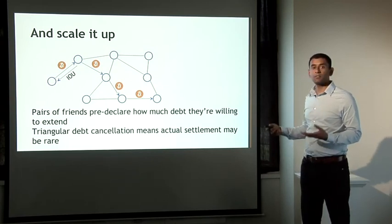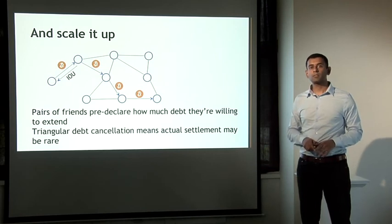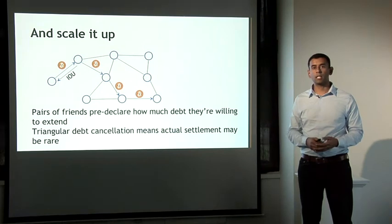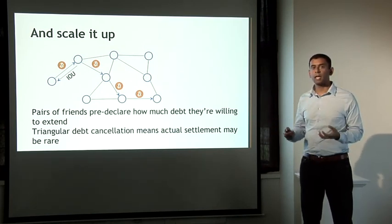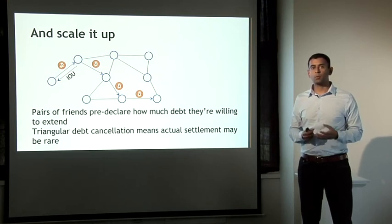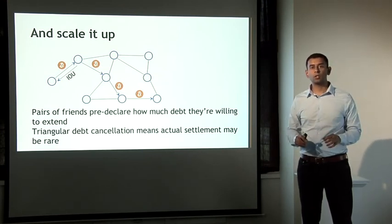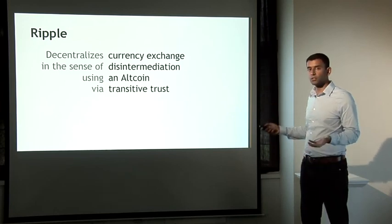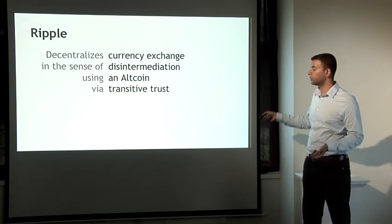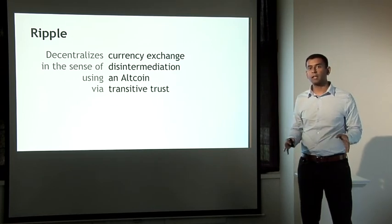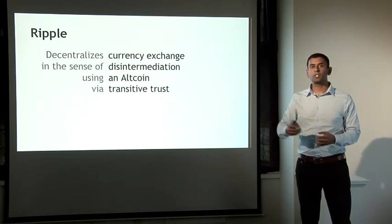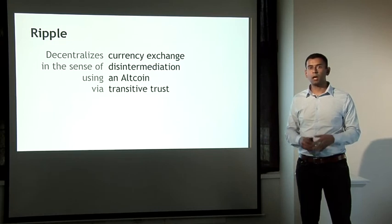This is a simplified version of what Ripple does. Ripple is what you might call an altcoin, but it's more than that — it has its own consensus mechanism, not exactly based on proof of work. This notion of trust relationships and IOUs is central to Ripple, and what it allows you to do is disintermediate currency exchange. We've decentralized currency exchange in the sense of disintermediation using an altcoin. The key property used here is not atomicity, but rather starting with a limited amount of trust and using the transitive property of trust to scale it to all participants in the world.